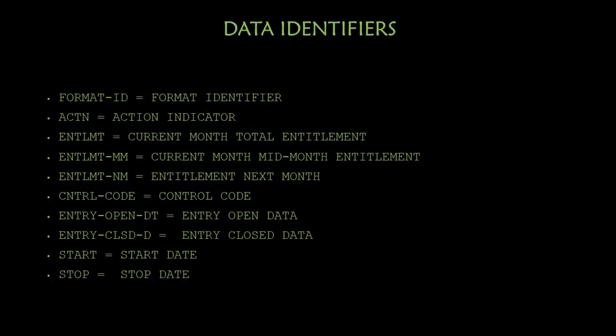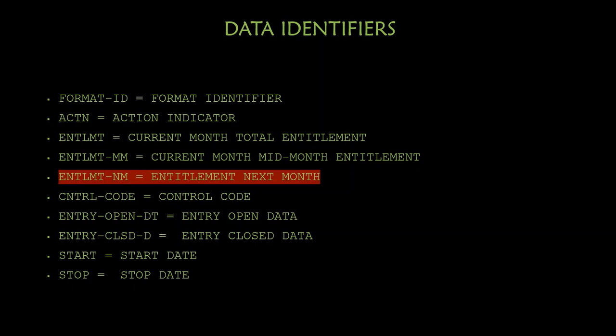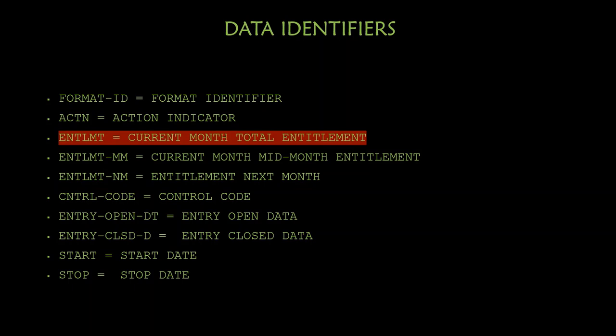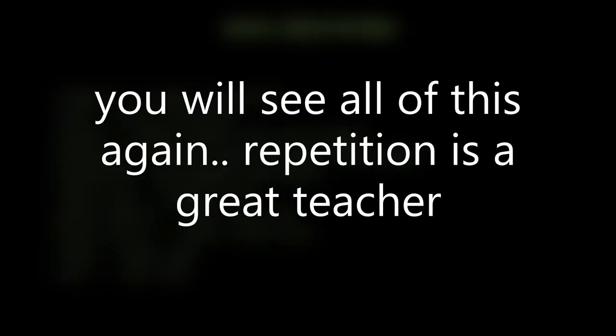Data identifiers — here is a list. Two things that stick out are: entitlement-MM, which is the current month mid-month entitlement; and entitlement-NM, which is the entitlement for next month. 'Entitlement' by itself is the current month total entitlement. Start date and stop date are also among the data identifiers we will break down when we start reading the MMPA.